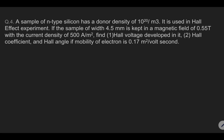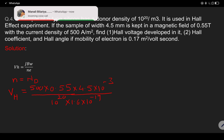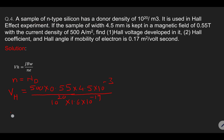Let us look at the next question. A sample of N-type silicon has a given donor density. We use the same formula VH equals J times B upon N times E, where N is the same as the donor density. Substituting: Hall voltage equals 500 into 0.55 (the given magnetic field), with width 4.5 into 10 to the minus 3 meter. The Hall voltage comes out to be 0.0773 V.